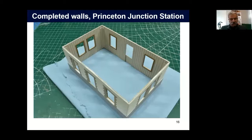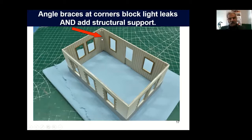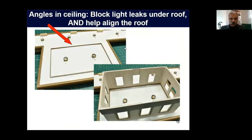I'm making Princeton Junction Station, which was a kind of mundane little hut along the Pennsy mainline — probably the most uninspired station the Pennsylvania Railroad ever had. You can see the striations of the walls with the aluminum foil between the layers. A couple of features: because I scratch-built this, I didn't have precisely cut window openings, so I had to make internal frames as light blocks around the window to prevent light from getting between the window and the wall. I also added angle braces on the corners — that adds structural support and blocks any light leaks around the corners where the sides and ends meet.